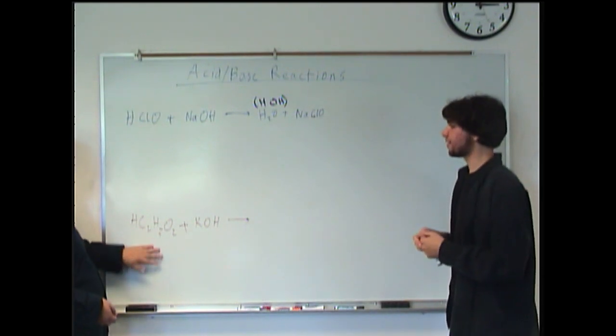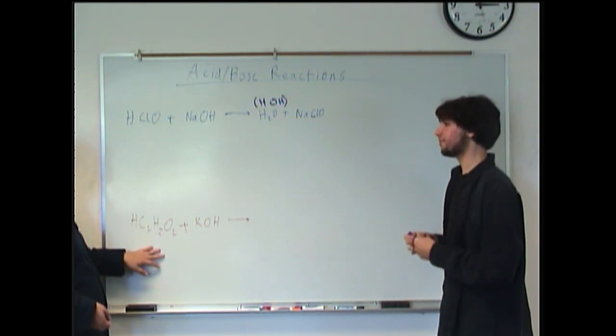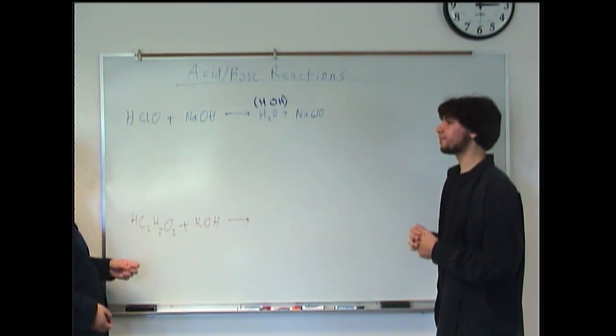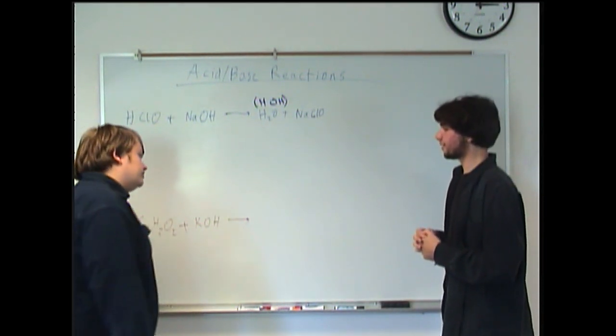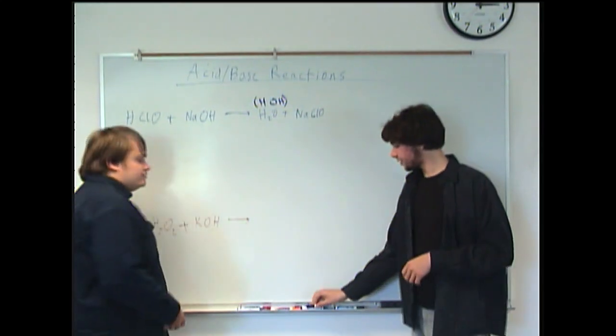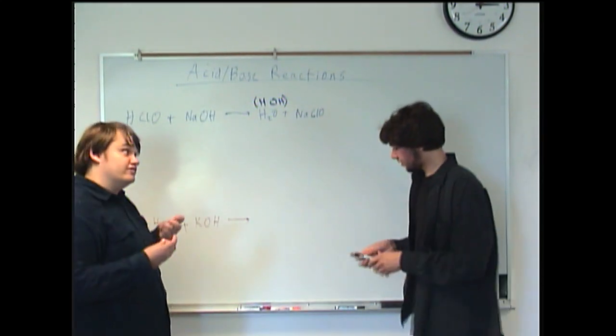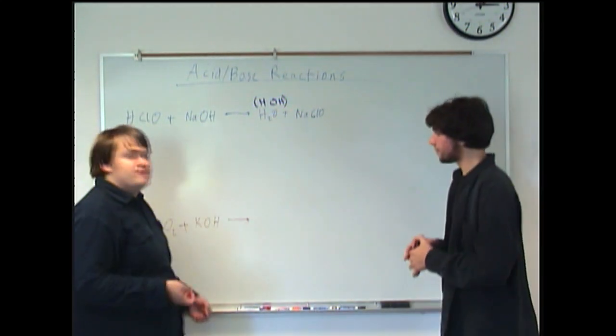That looks interesting. So, we have the acid. This is acetic acid, which is found in vinegar. And then you have potassium hydroxide. Alright. Now, notice here, I didn't write any products. We're going to try to predict some products based on what we know about acid-base reactions. Okay.